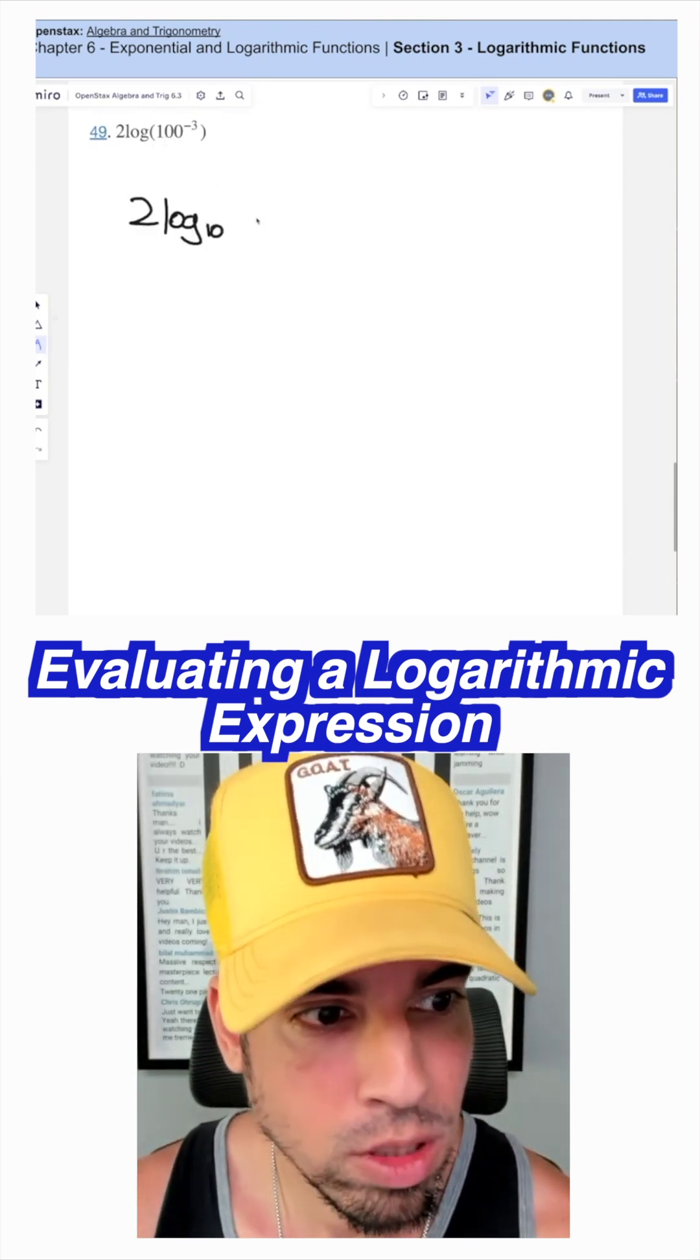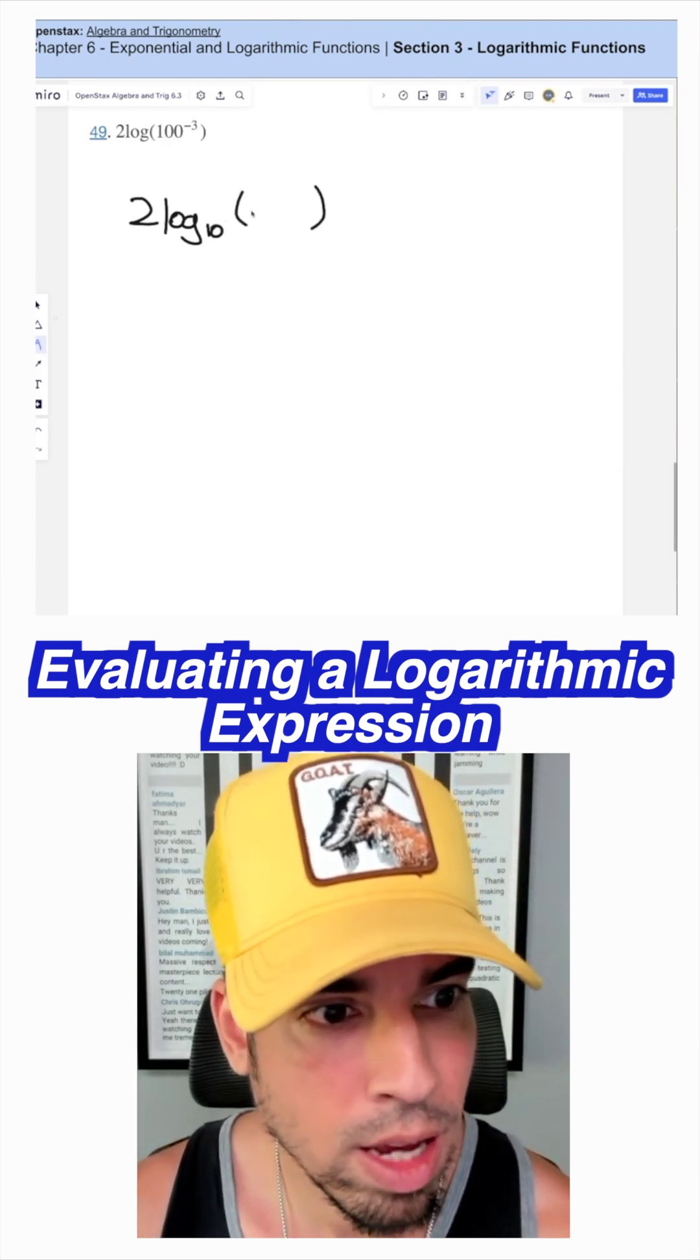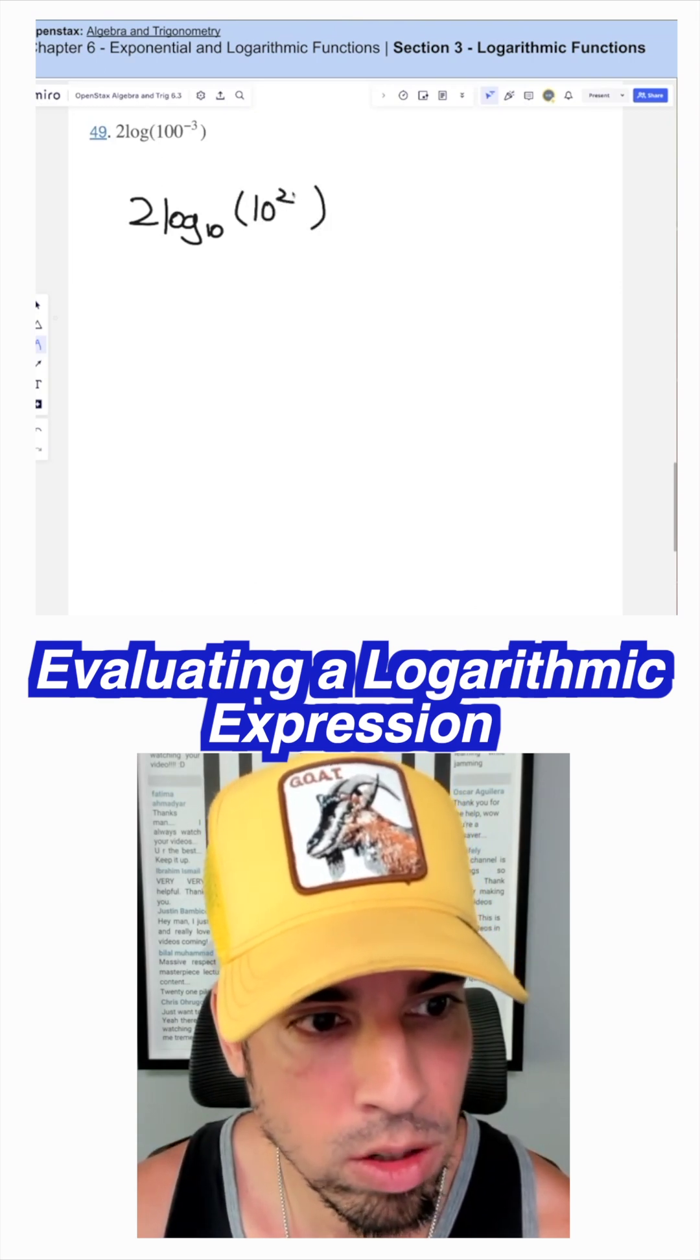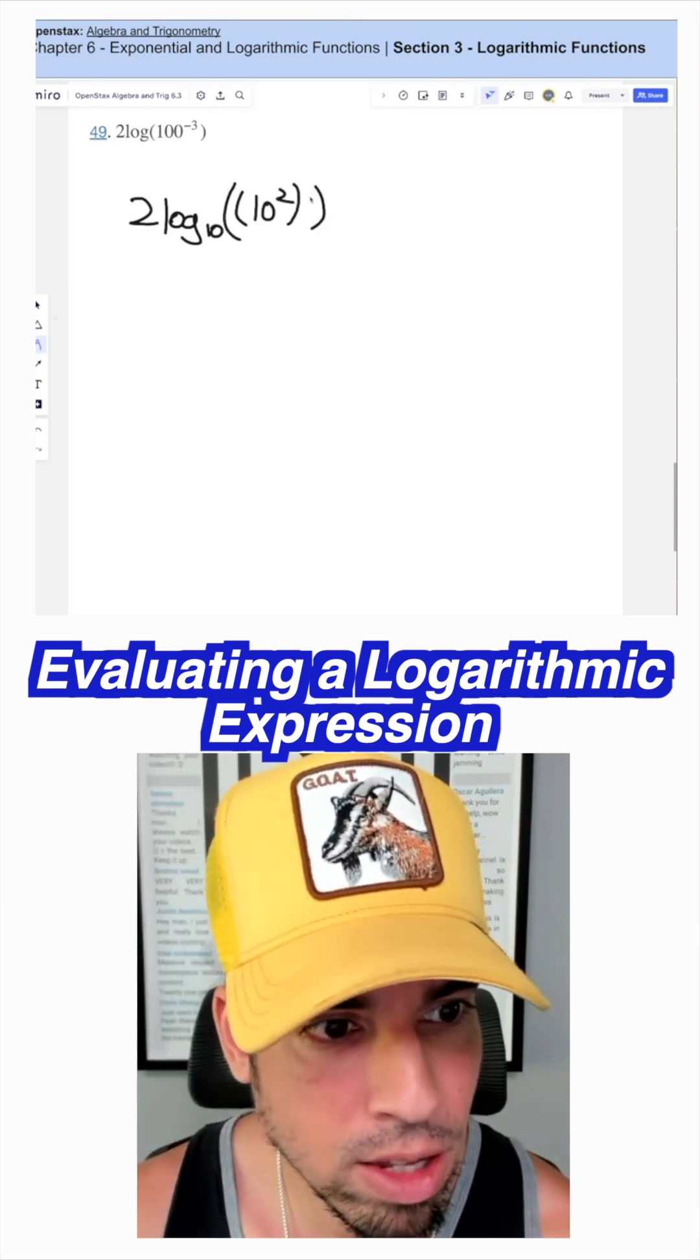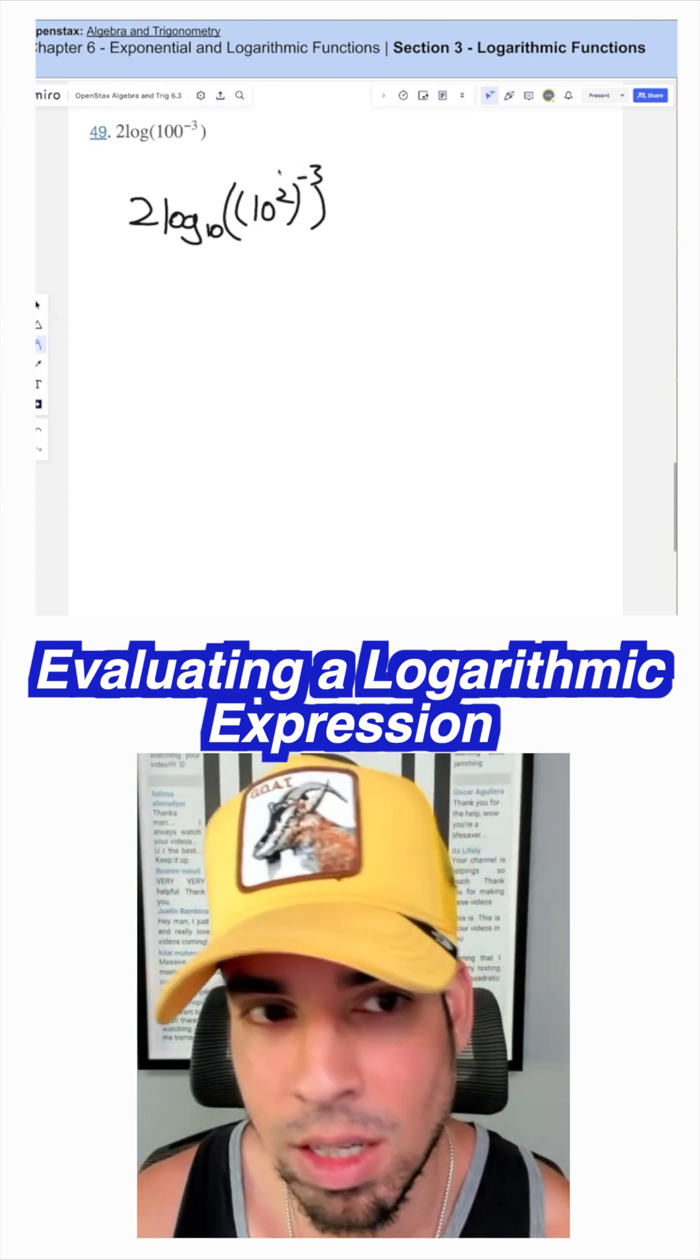And then we have 100 to the negative third. I'm going to make this a little bit easier by writing 100 as 10 squared. And then it's that value to the negative third. So we're going to write it like this, I'm gonna show you why we can take a little shortcut.